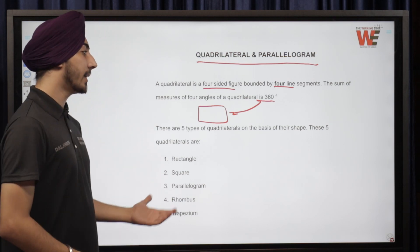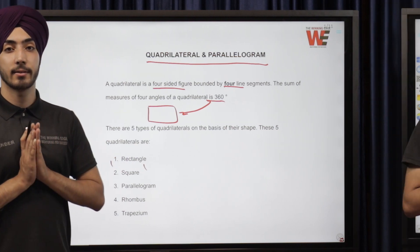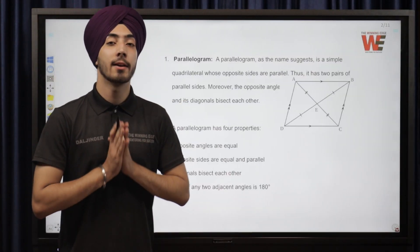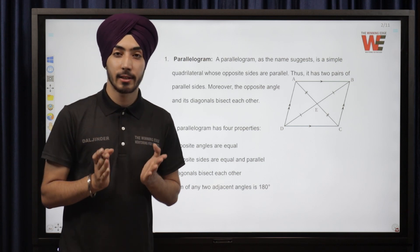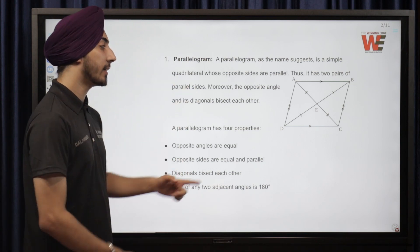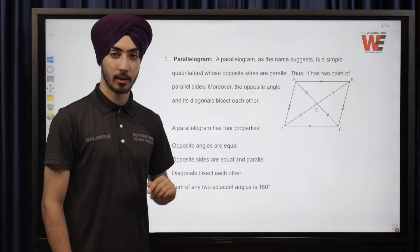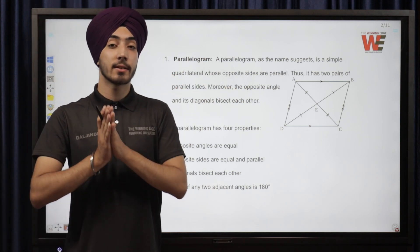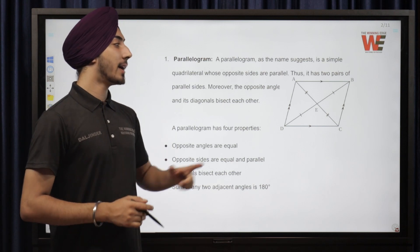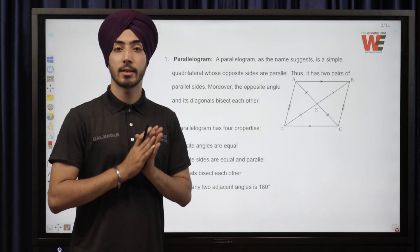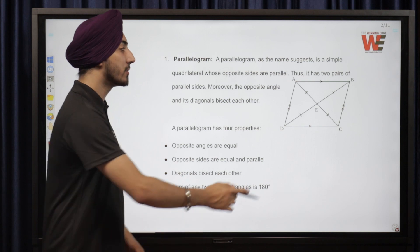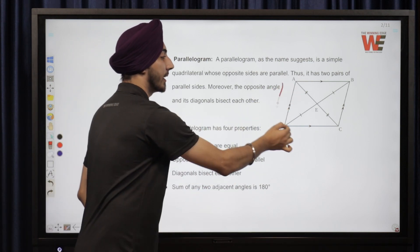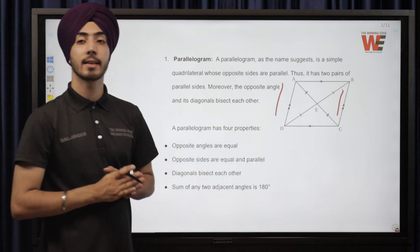The first type of quadrilateral we are going to see is the parallelogram. A parallelogram is itself a quadrilateral because it is a four-sided figure, as you can see in the figure alongside. A parallelogram is a four-sided figure which has equal and opposite sides that are parallel. Side AB is parallel to side DC, and side AD is parallel to side BC — both pairs are equal.